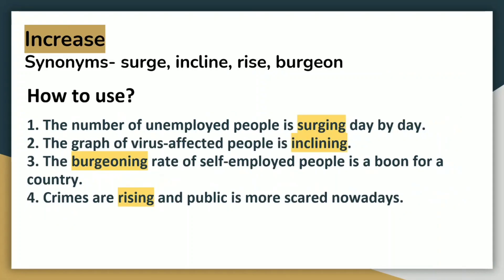The next word is INCREASE. This word is used in Task 2 and in Task 1 also. The irony is an average English speaker and a person with advanced English speaking skills both use this word, but this word cannot promise you a good band score. Try replacing this word with surge, incline, rise, burgeon. The number of unemployed people is surging day by day. The graph of virus-affected people is inclining. The burgeoning rate of self-employed people is a boon for a country. Crimes are rising and the public is more scared nowadays.